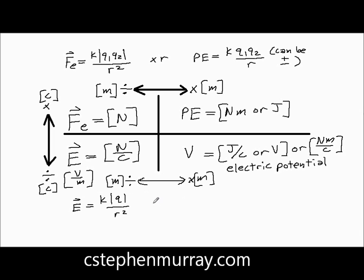Down here, divide by coulombs, divide by Q, I get electric field equals K Q over R squared. Multiply by R, and I get my voltage, or my electric potential, which is K Q over R, and I'm going to again write, can be positive or negative.